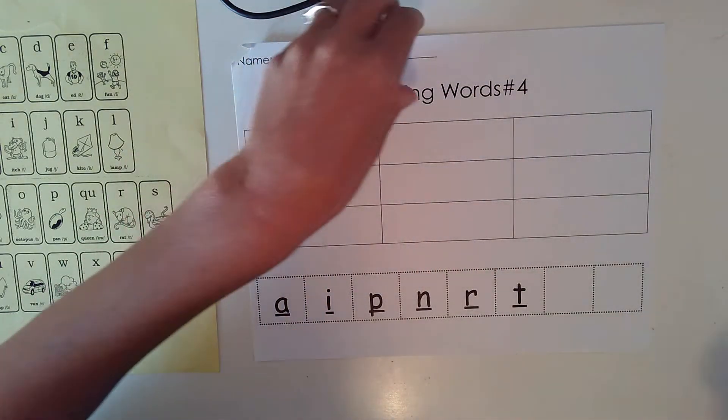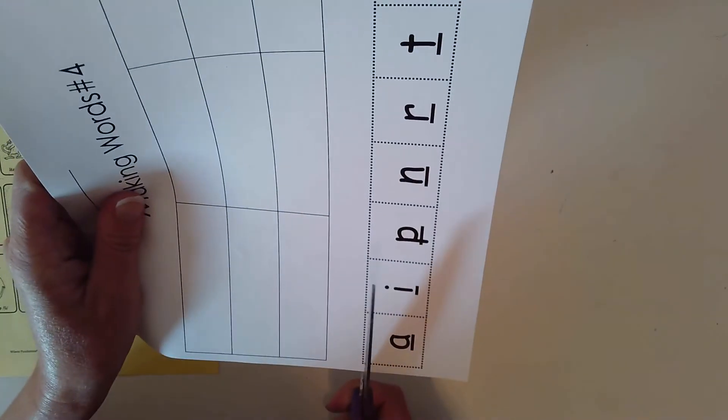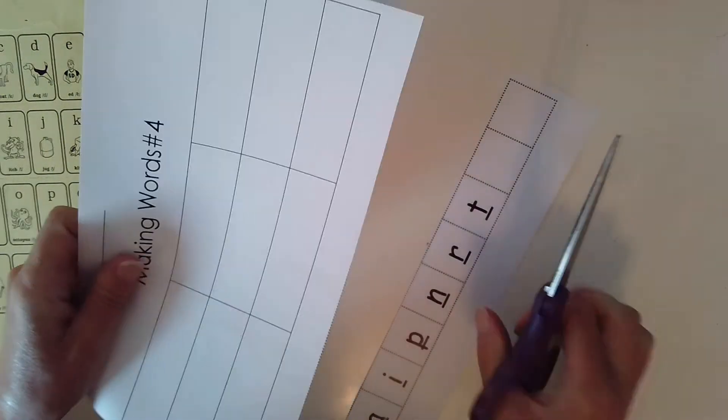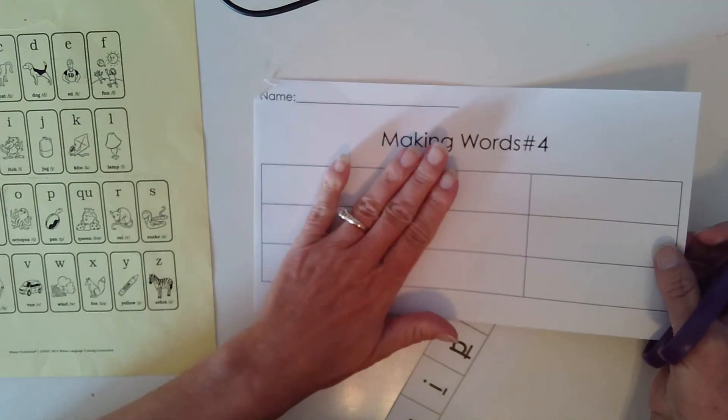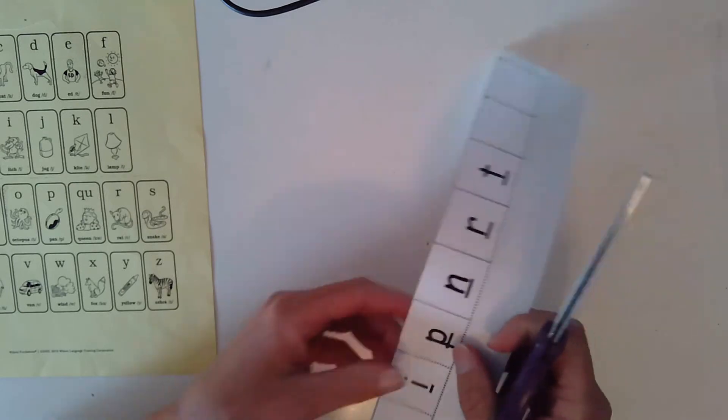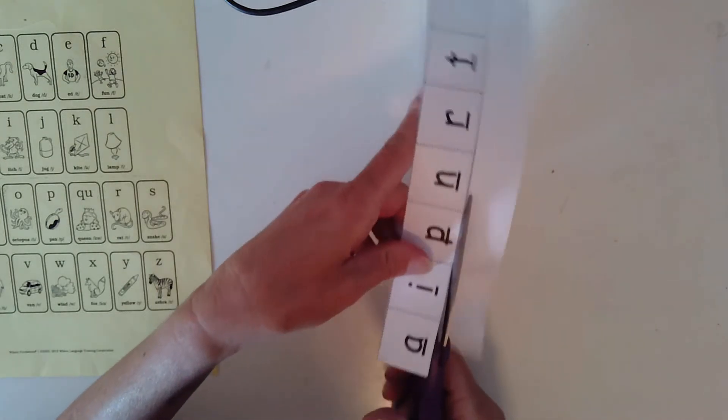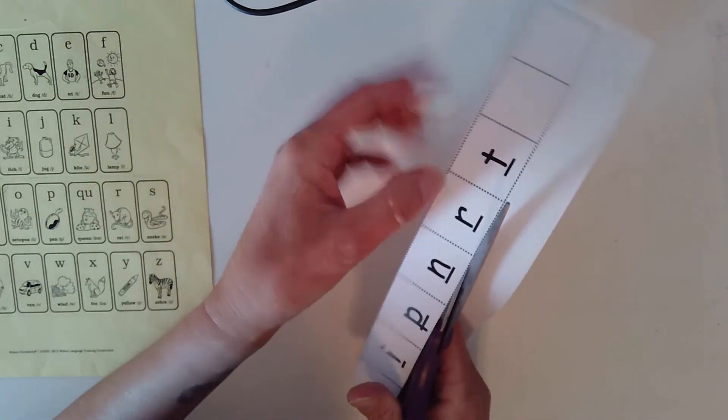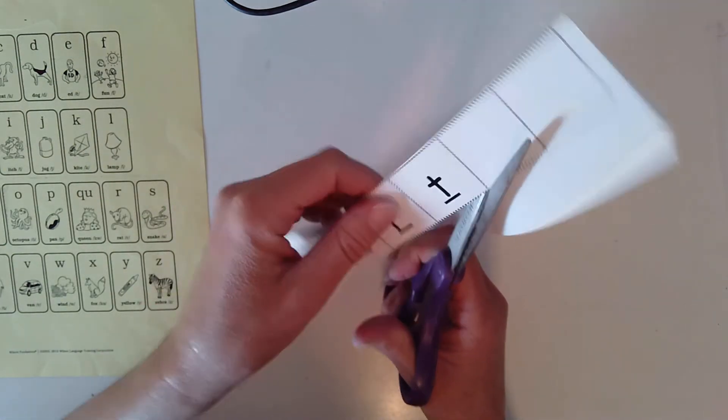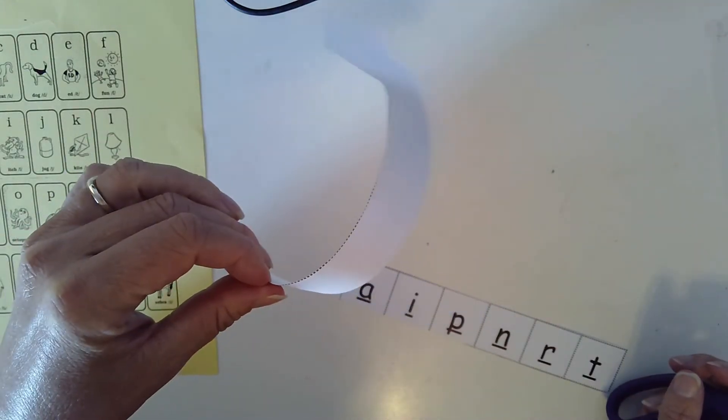Then we are going to take our scissors. Remember, thumb in the little hole on top, and we're going to cut a straight line to cut out our letters. Our work mat will go in a safe space because we will need it next time. And today, we need our letters. So we're going to need to cut them all out. Thumbs on top. I'm using my other hand to hold my paper. I like to cut with my point poking up a little bit. This is a scrap. It's going to go in the recycling bin.